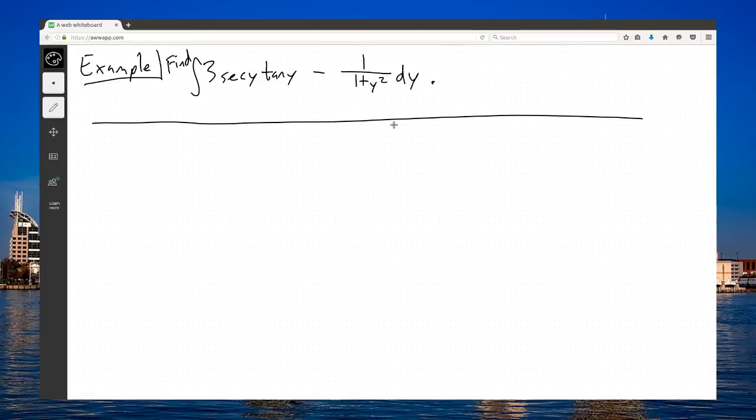This is a hard problem, right? Well, no, it's actually one of the easiest problems I could possibly do because you should always be checking for recognized derivatives. Secant times tangent is the derivative of secant. 1 over 1 plus variable squared is the derivative of inverse tangent. So in fact, this is just a one-step problem.